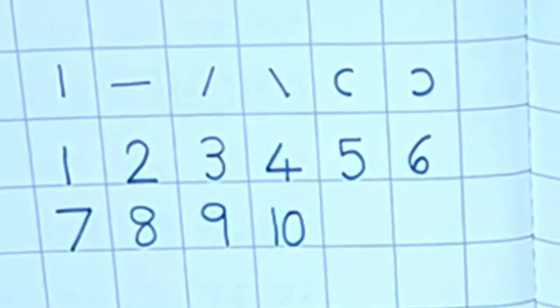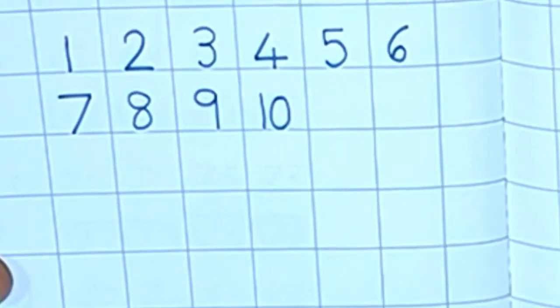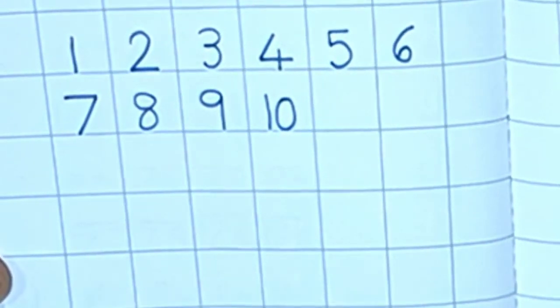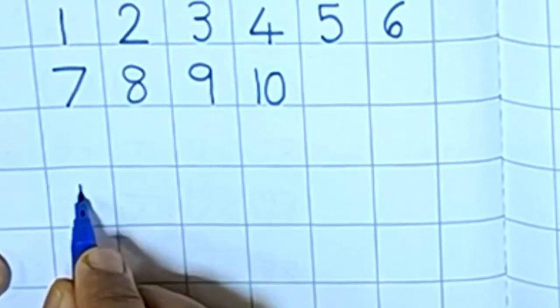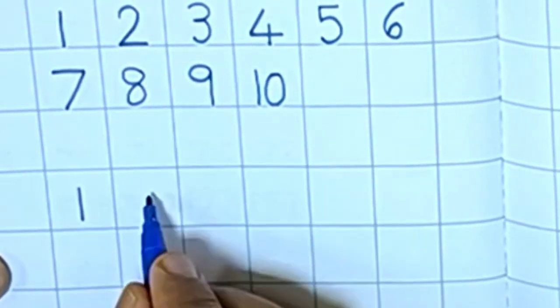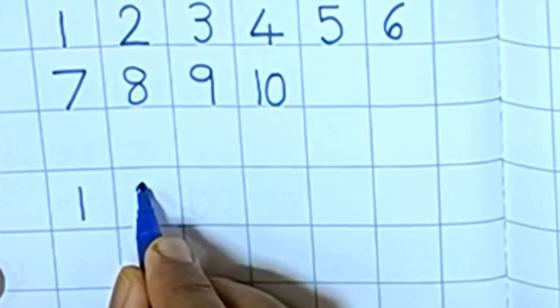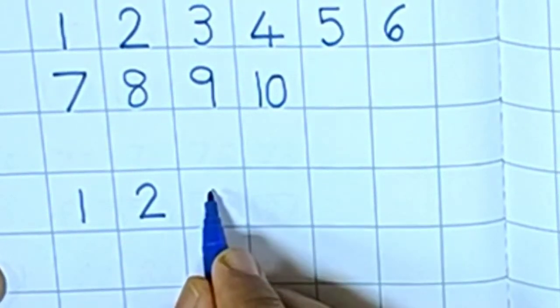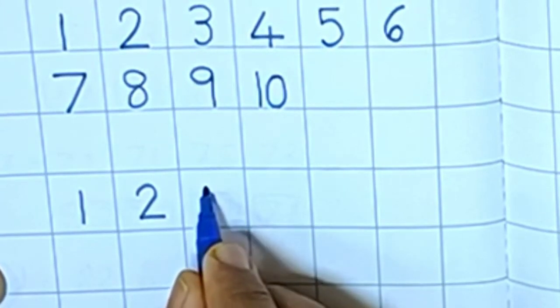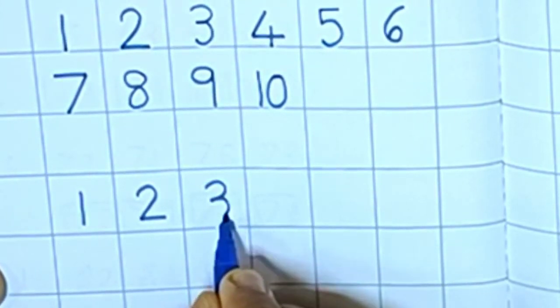Okay, let's write again. First number 1, how to write number 1? Up to down, straight line, standing line. Number 2, curve, slanting, sleeping. Number 3, two curves, first curve and second curve.